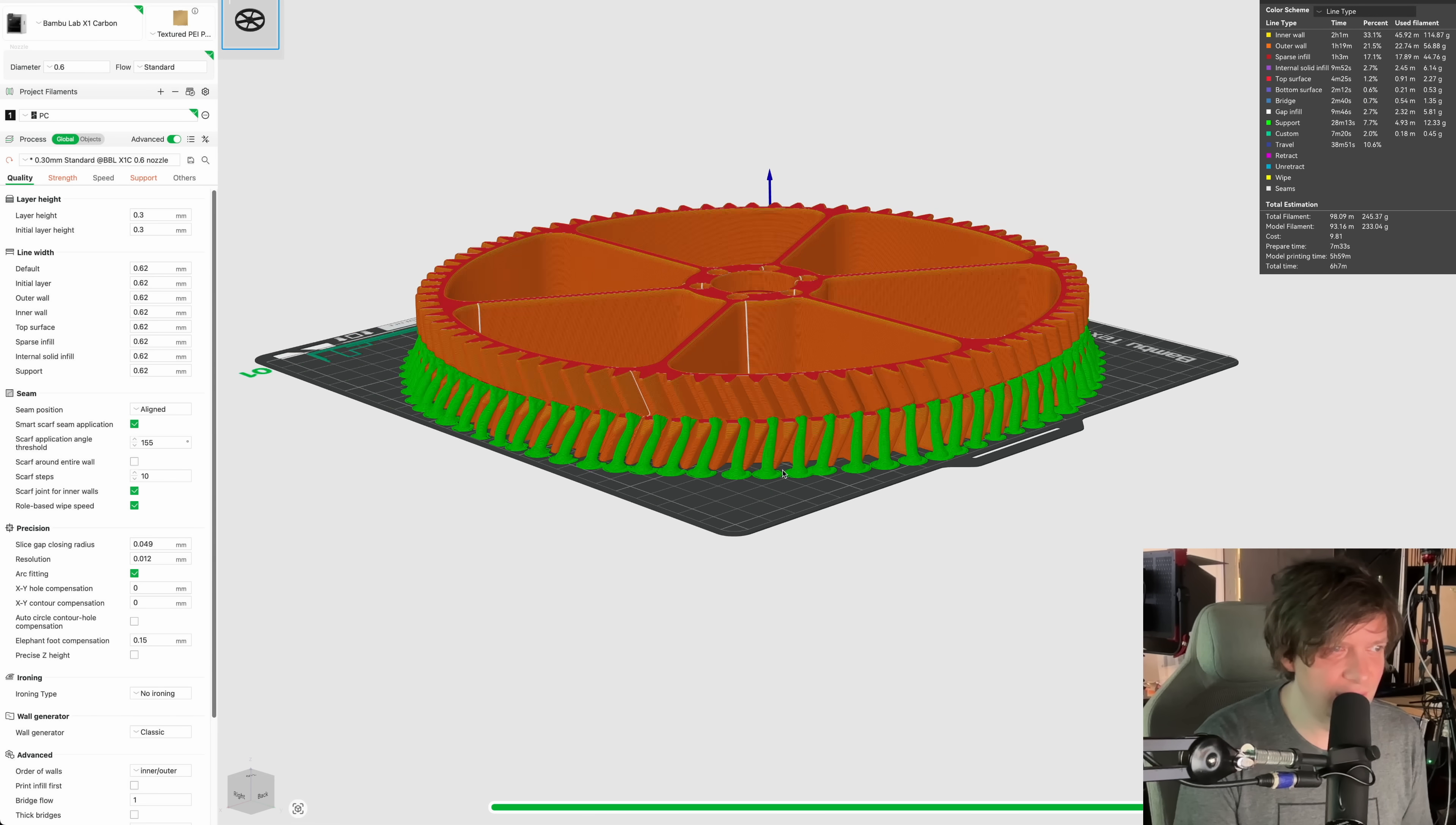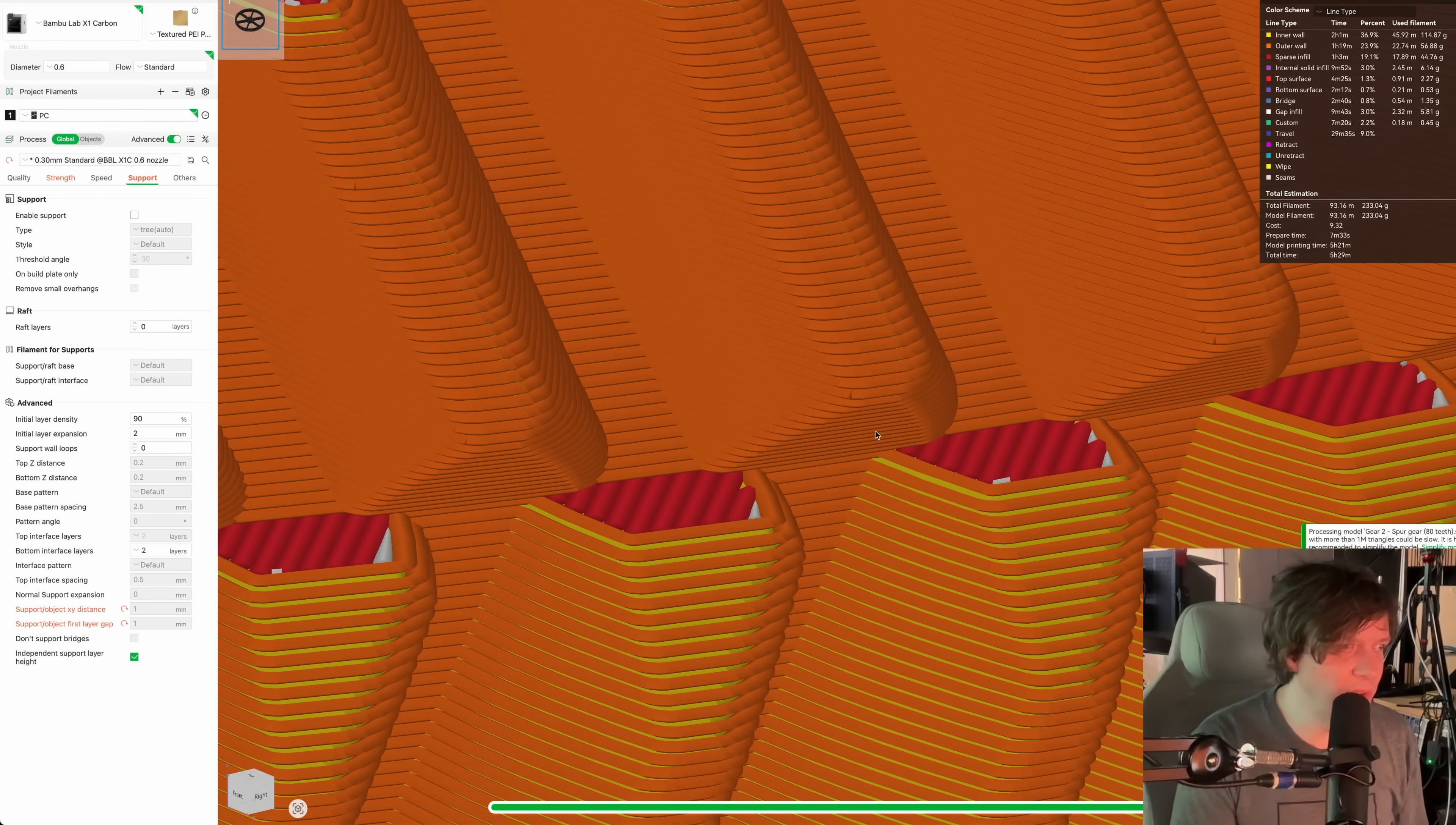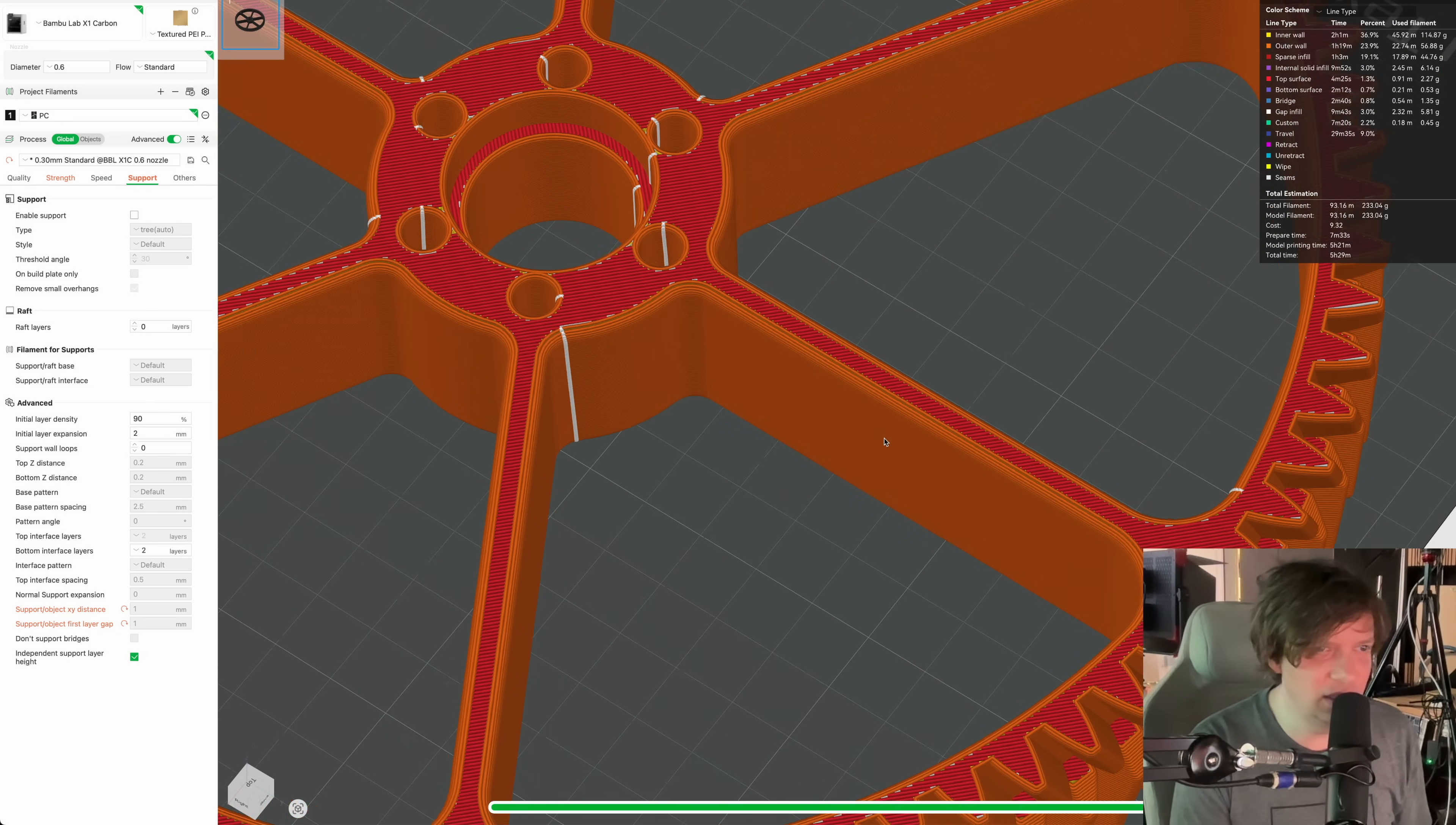So here's a good point with my design. The program wants to make supports for these teeth but thanks to the chamfer I don't need it. So this can be printed without support thanks to the brilliant design. Okay, we're almost ready to print that. Let's go take our first gears for today.